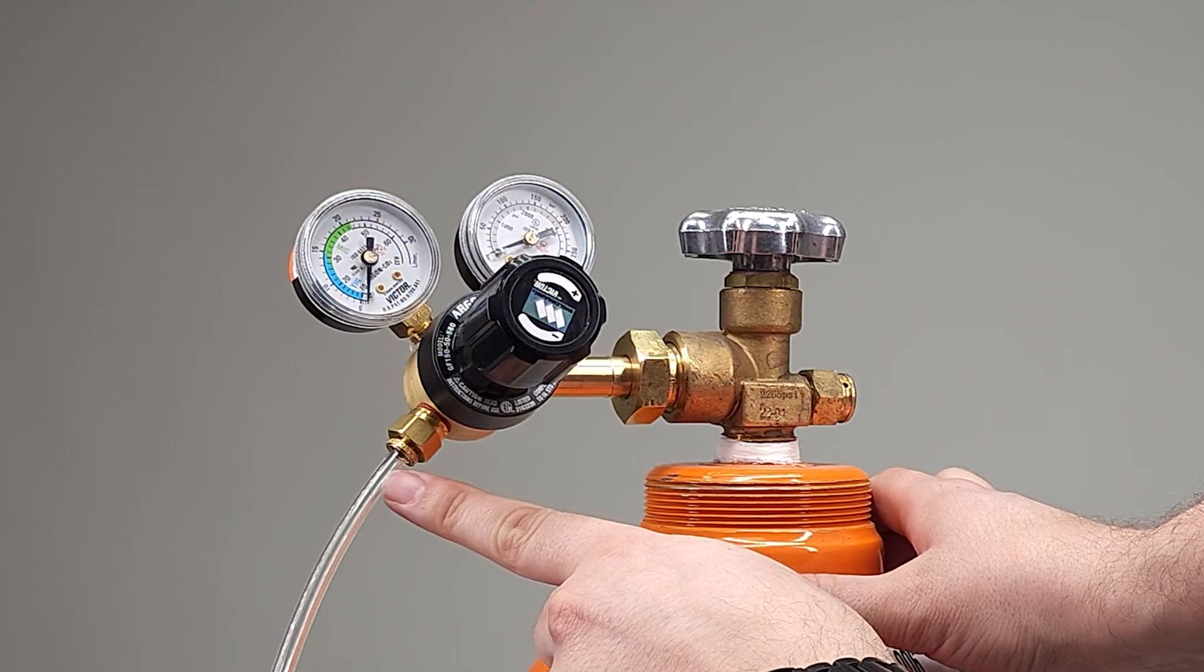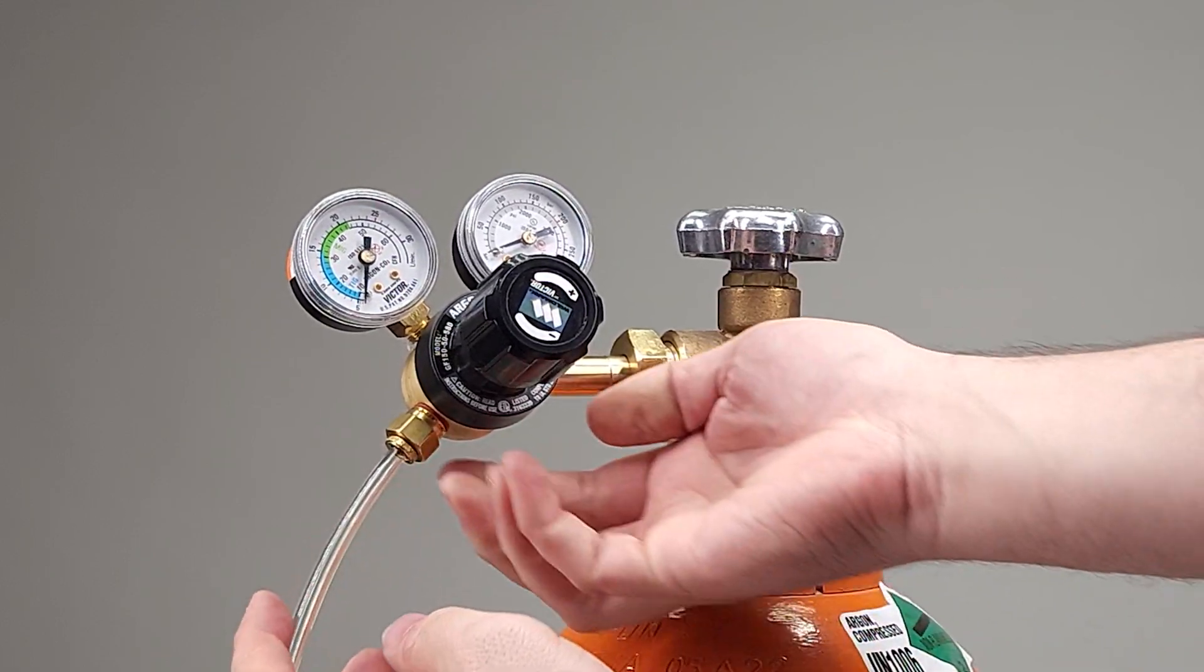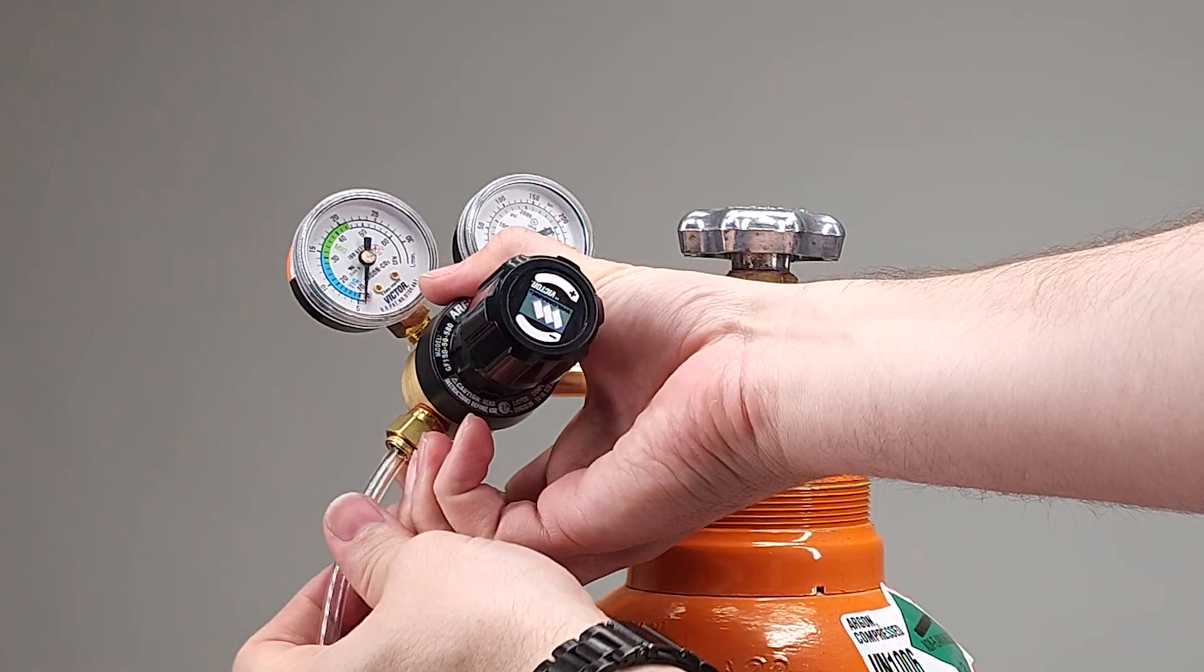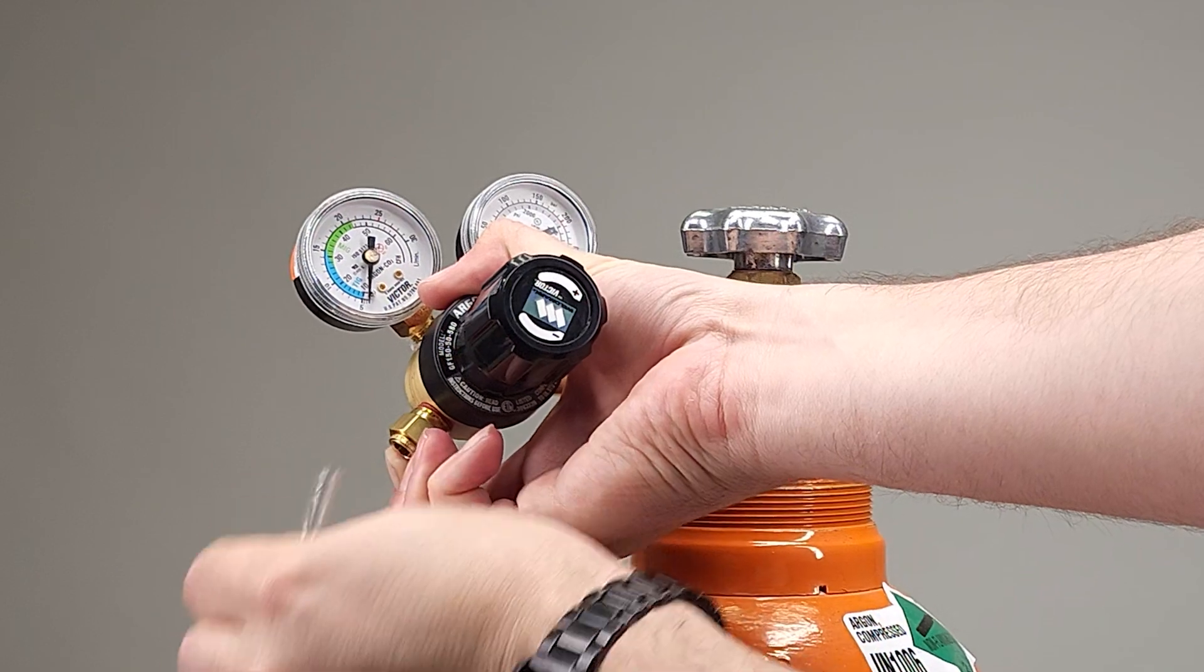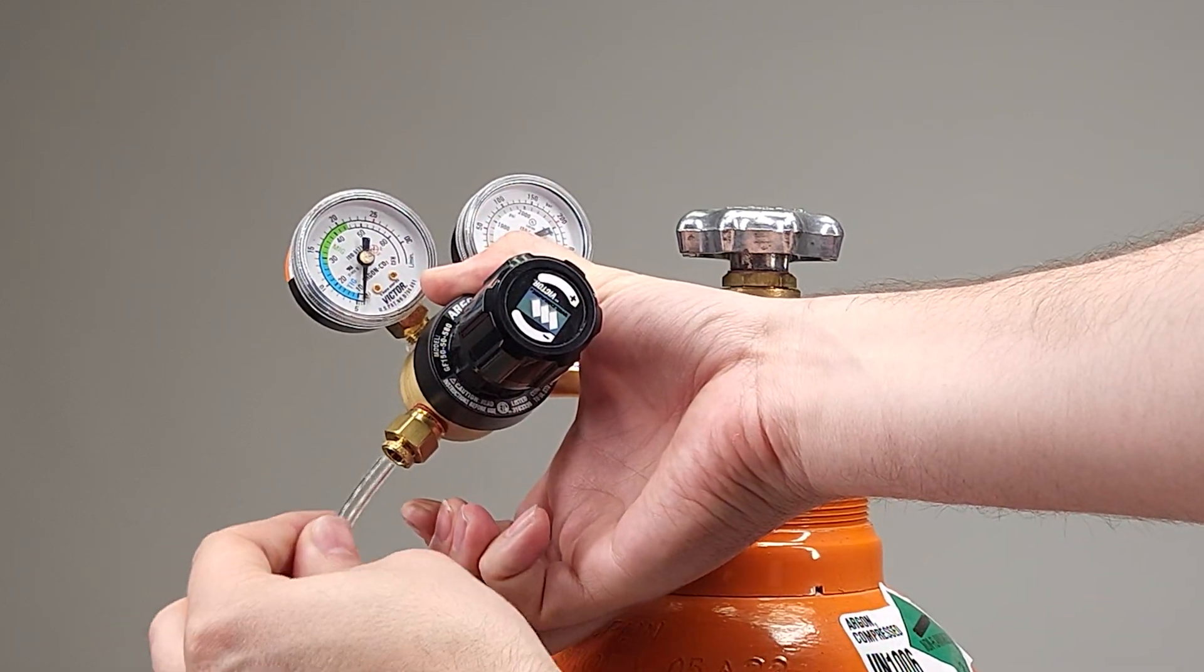If we want to remove that, we're going to remove it by pushing that piece that was moving towards the body of the regulator and then pulling out that hose. We can just push it in, pull it out in that manner.